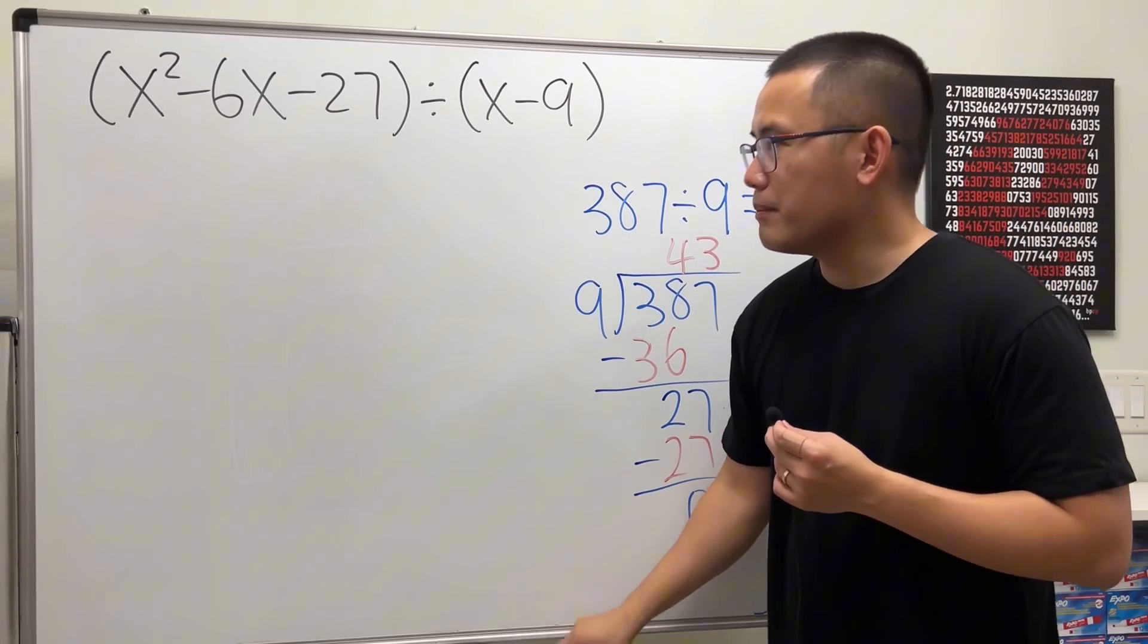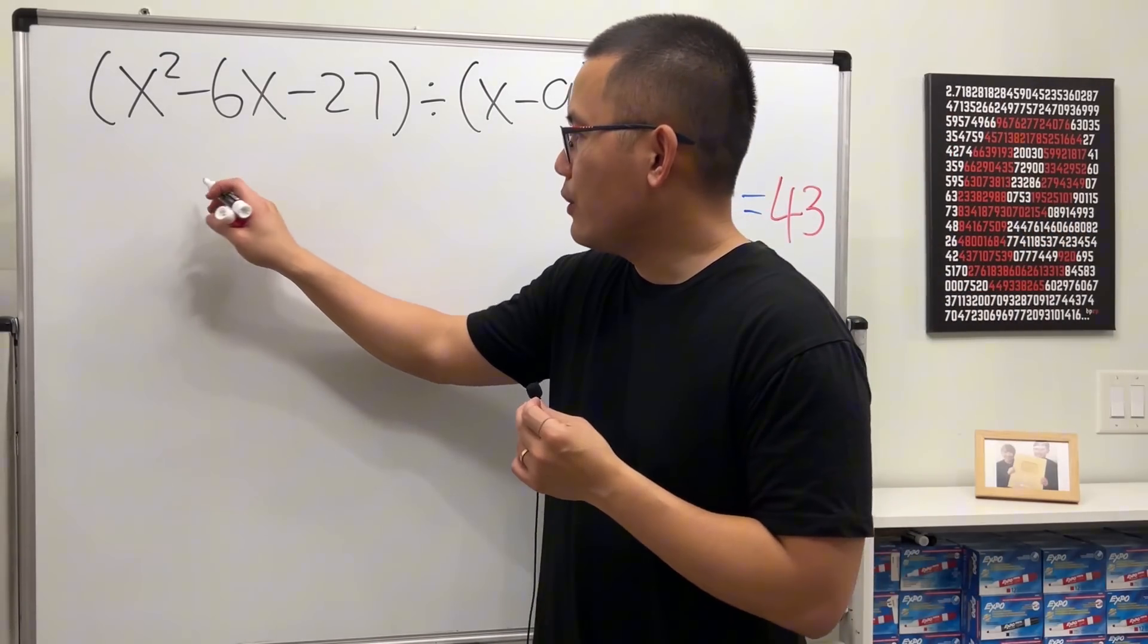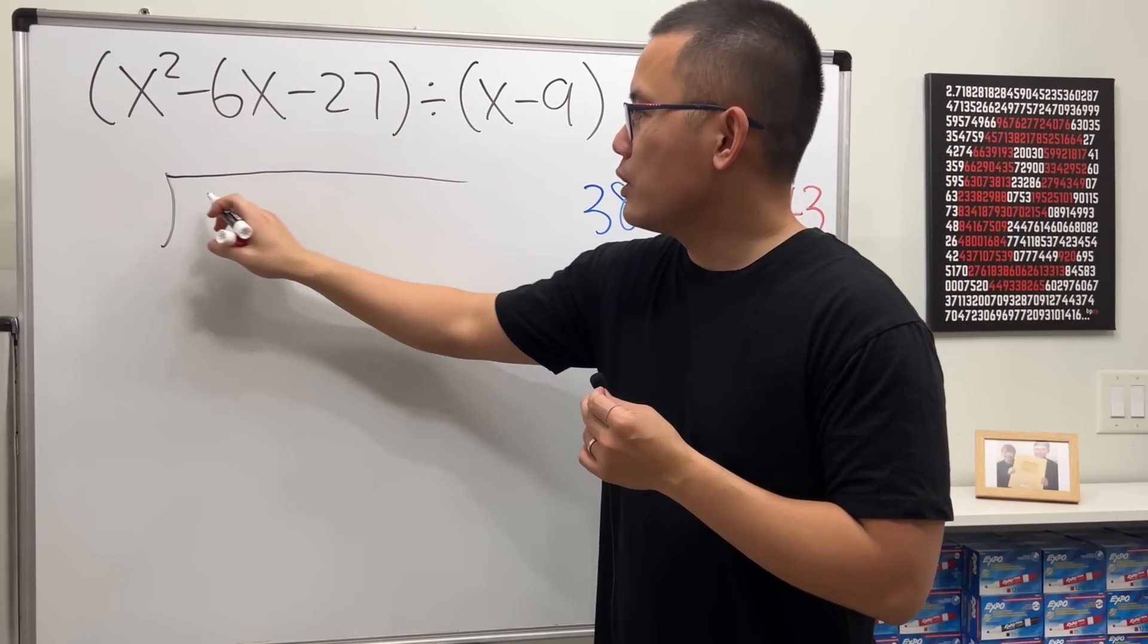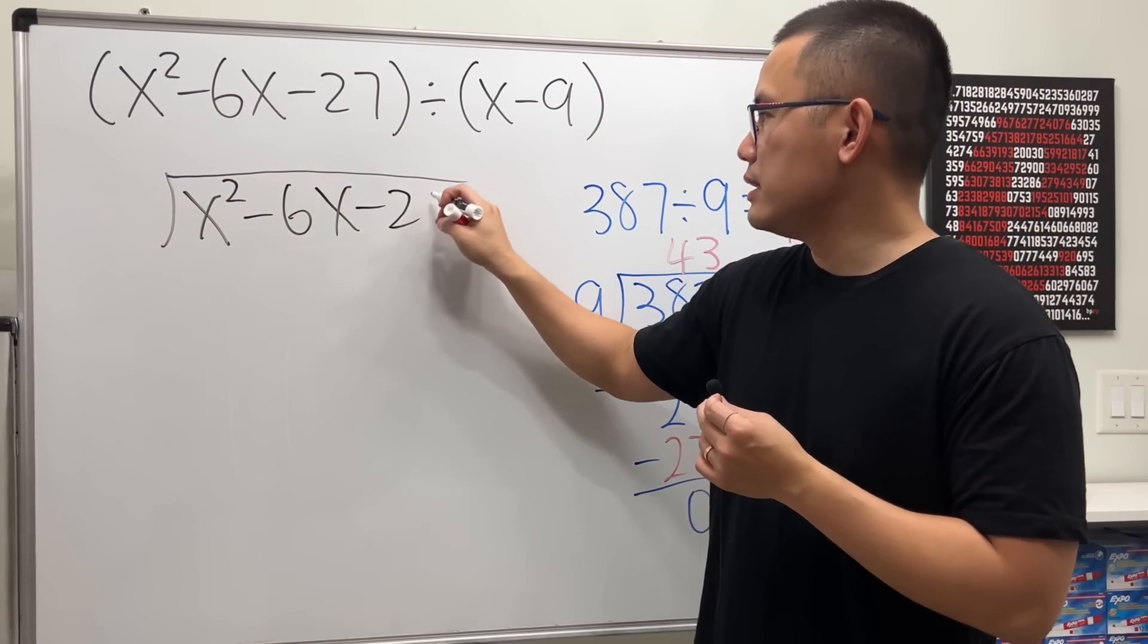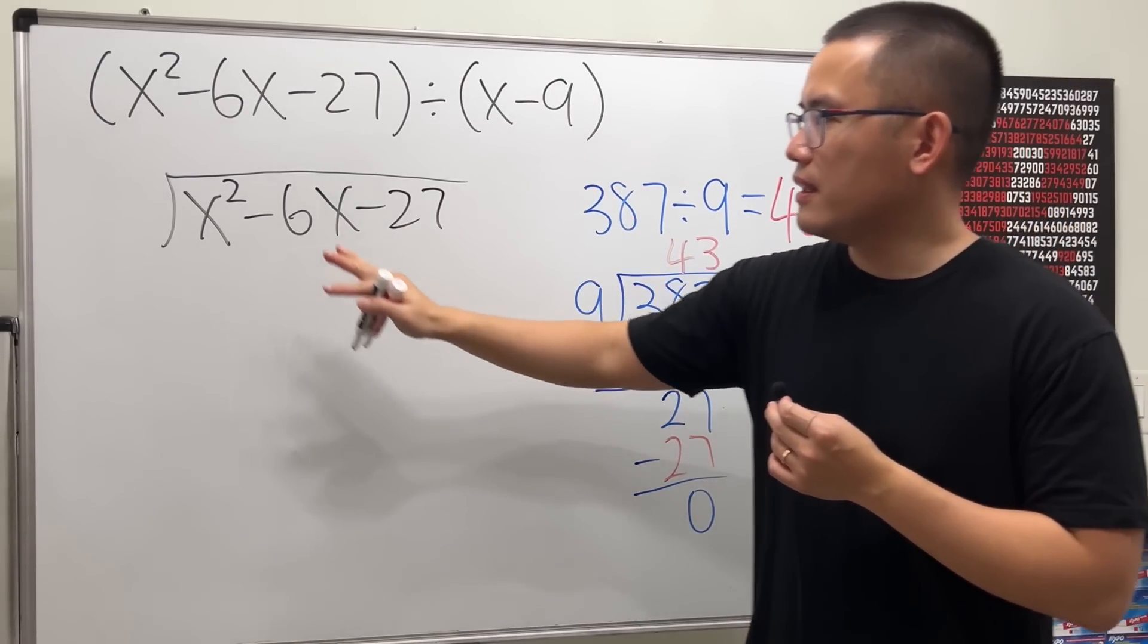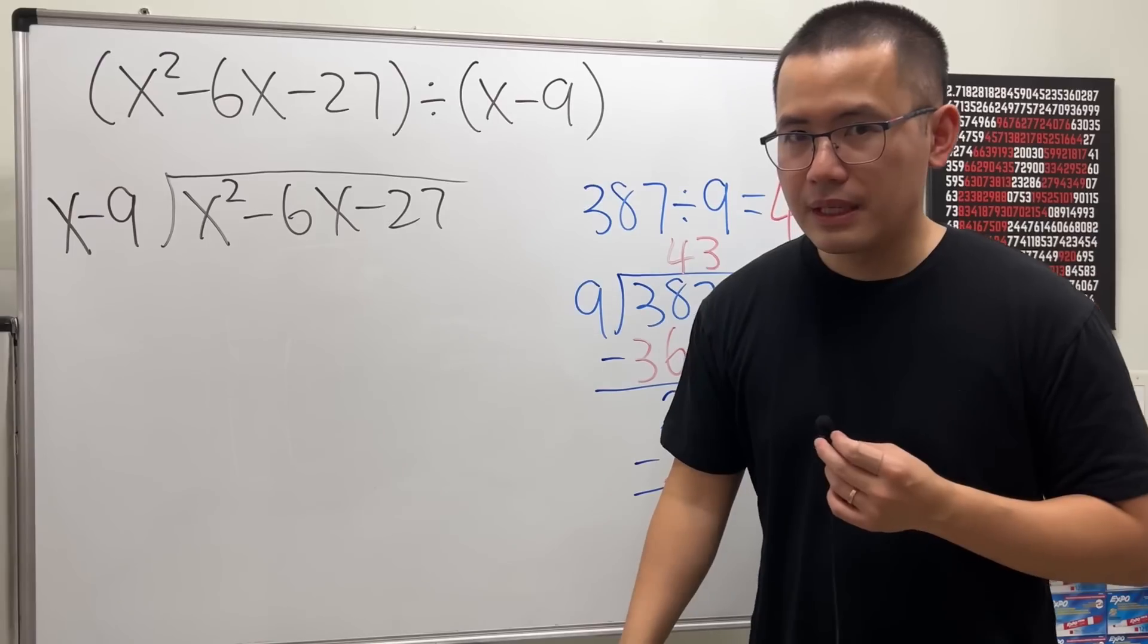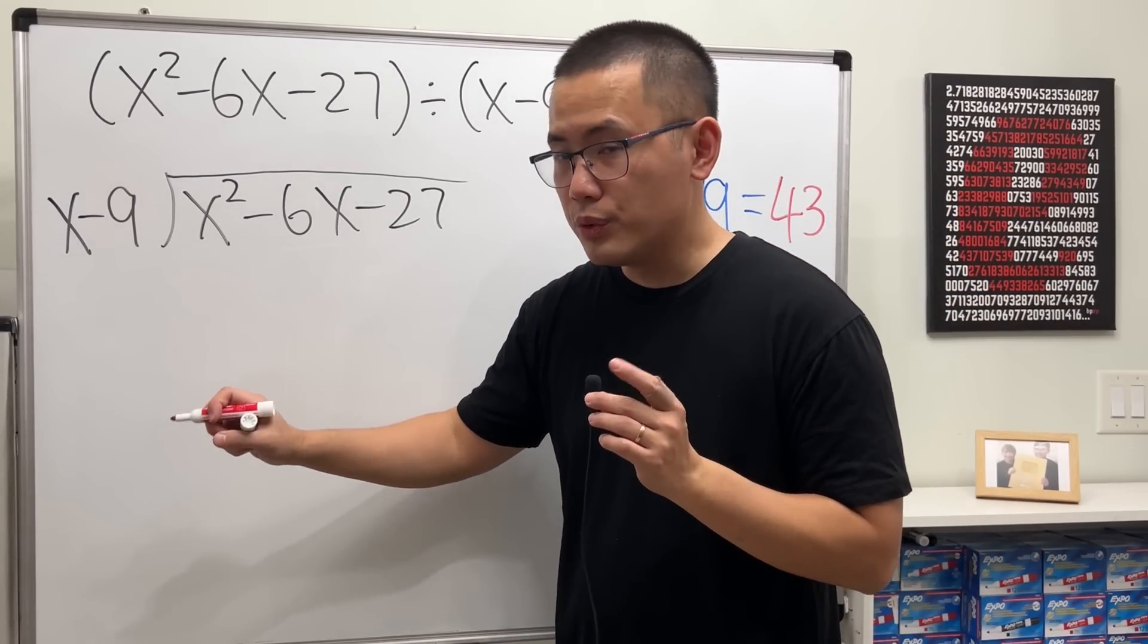So it's the same thing, but now we're going to do the algebra version. I'm going to draw that long division symbol. The first thing goes inside, x squared minus 6x minus 27. And the second thing goes on the outside, x minus 9. Now for the polynomial version, this is trickier though.